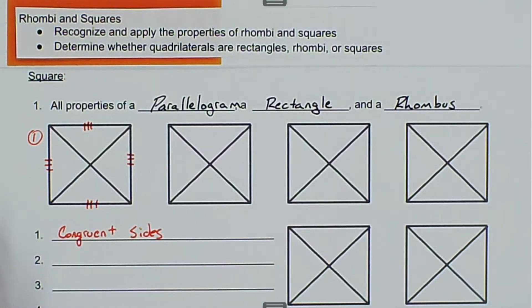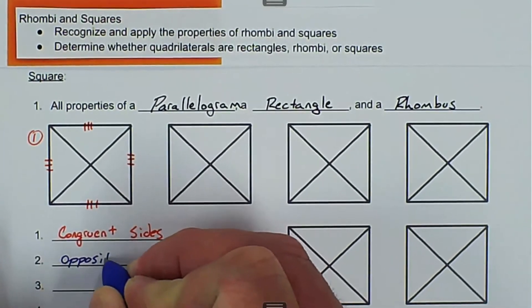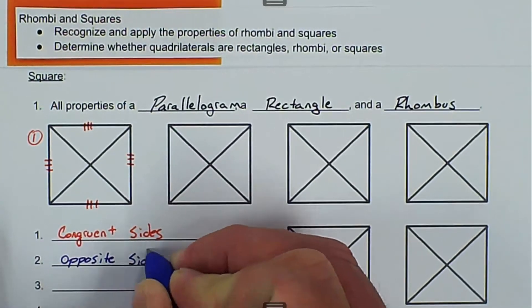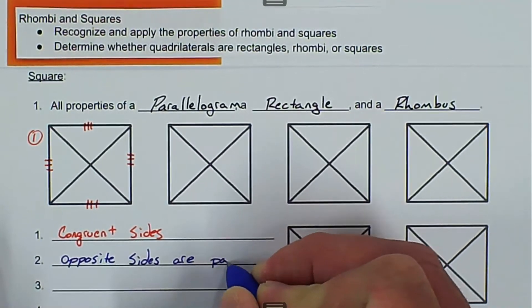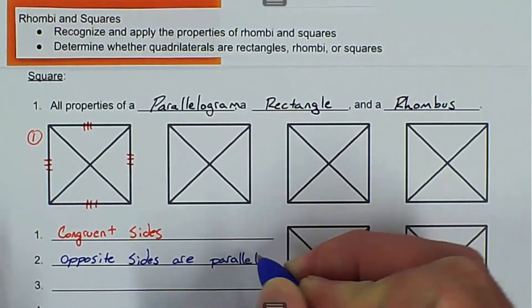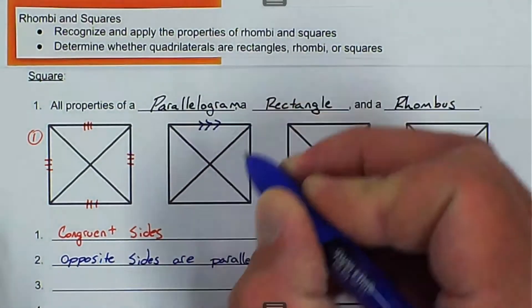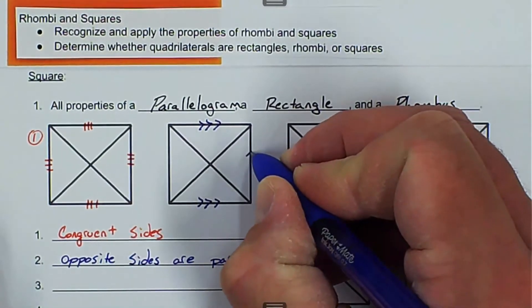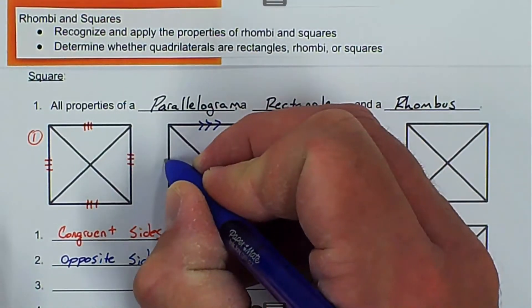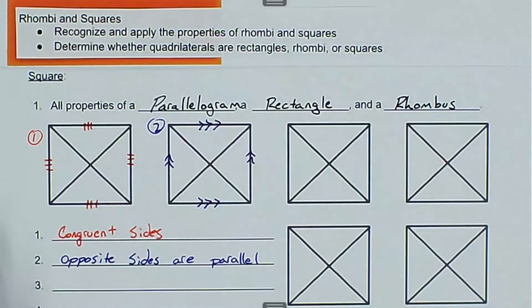Number two, opposite sides are parallel. If we put three parallel marks there and three there, and two on the right side and two on the left side, that's going to be our example two.